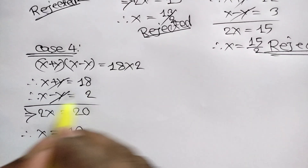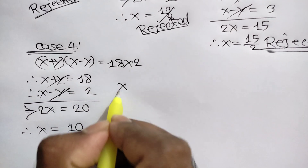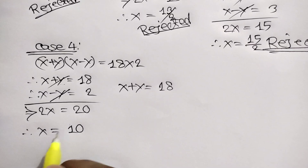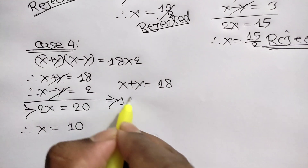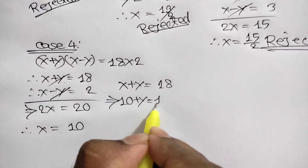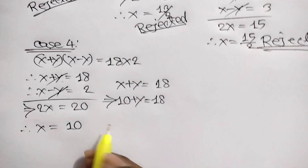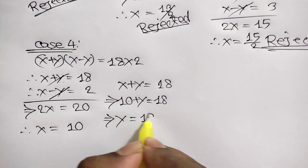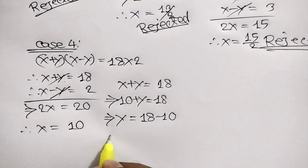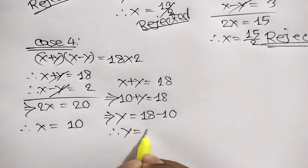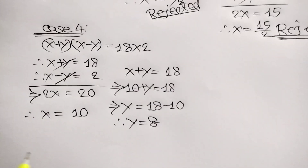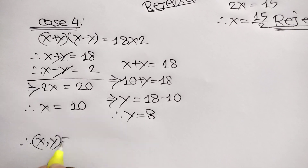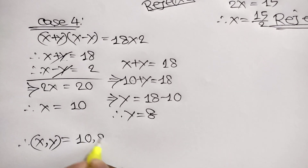Now, x plus y is equal to 18 and x is equal to 10. So we can write 10 plus y is equal to 18. Taking 10 to the right side, we get y is equal to 18 minus 10, so y is equal to 8. Finally, we get x equals 10 and y equals 8.